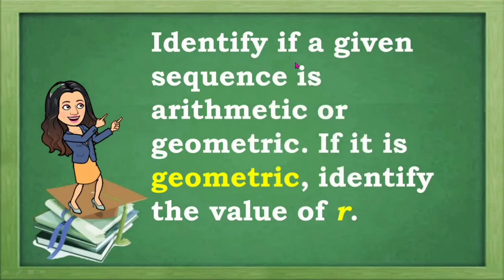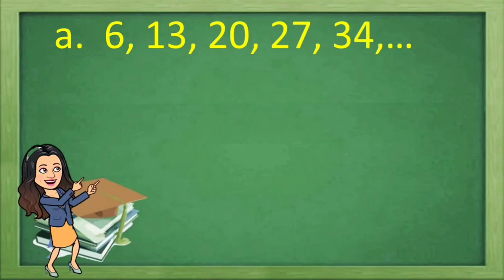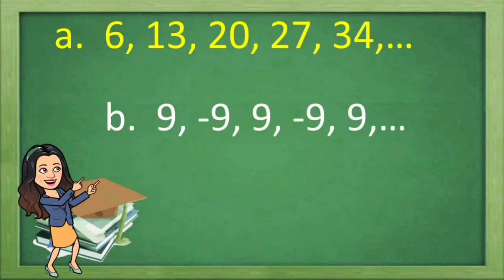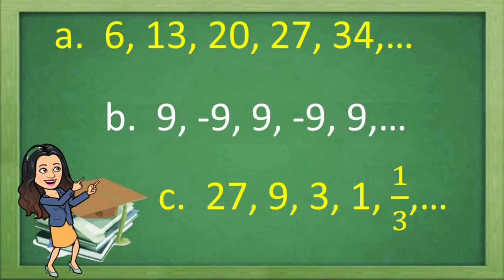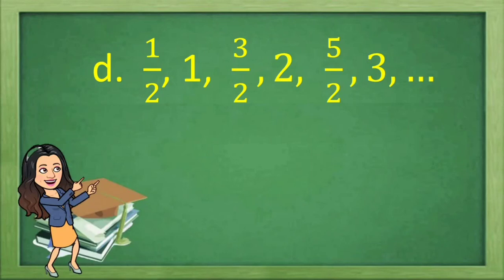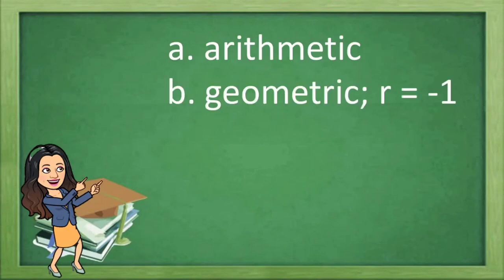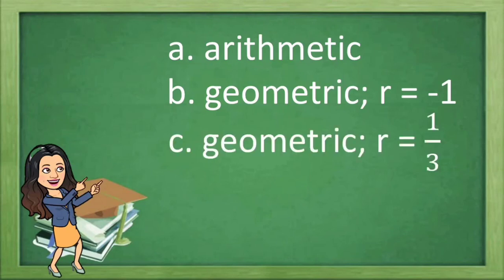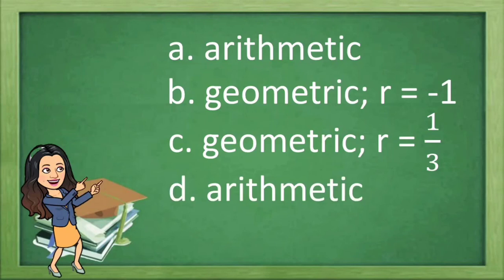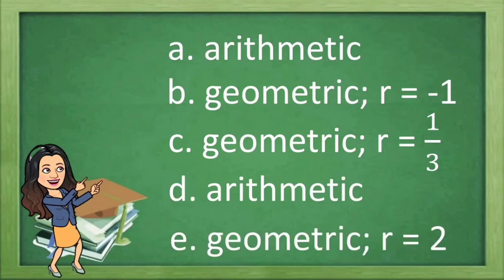Now it's your turn. Identify if each given sequence is arithmetic or geometric. If it is geometric, identify the value of R. Kindly check your answers after the activity. Check your answers: Letter A — arithmetic. Letter B — geometric, R is equal to negative 1. Letter C — geometric, R is equal to 1 third. Letter D — arithmetic. Letter E — geometric, R is equal to 2.